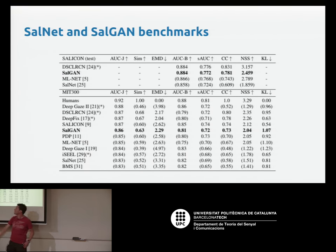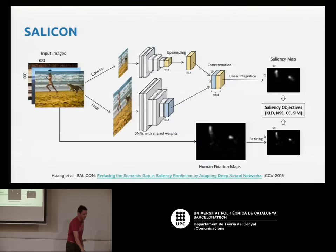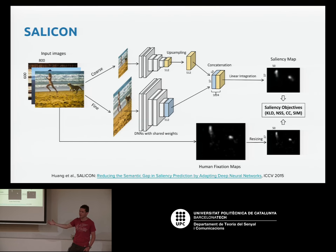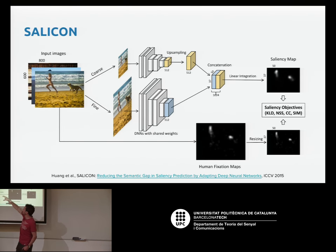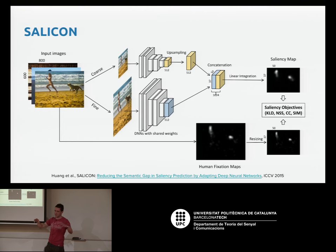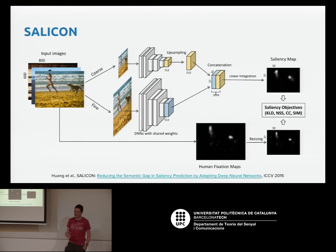This benchmark changes all the time, but this was our SalNet result and this is our SalGAN result. Another approach that came quite early is SALICON — the same group who created the dataset also built a model. Their innovative contribution is a coarse-and-fine approach: the same neural network is applied to both a small and large image, and the outputs are concatenated. So you're looking at different resolutions simultaneously. They also use multiple objective types and found KL divergence seems to work best.